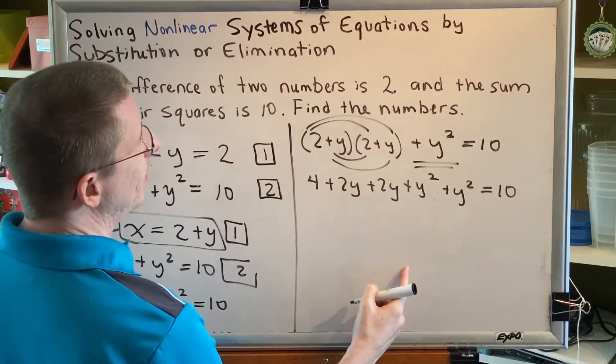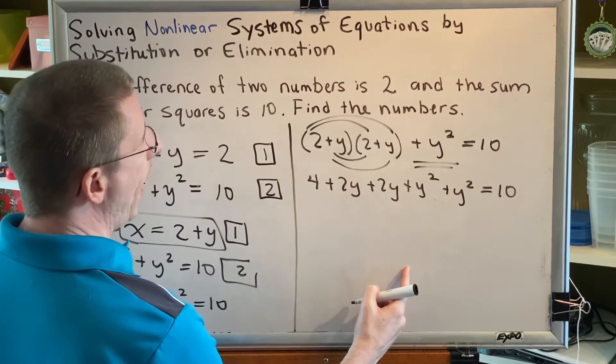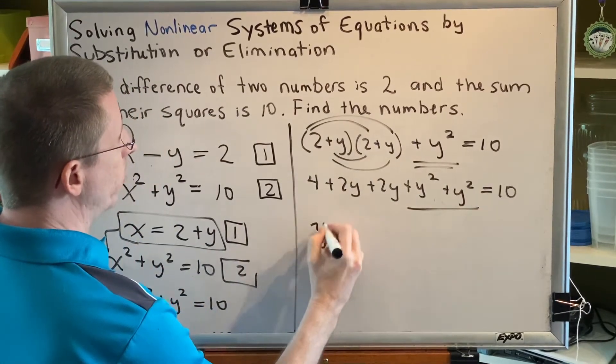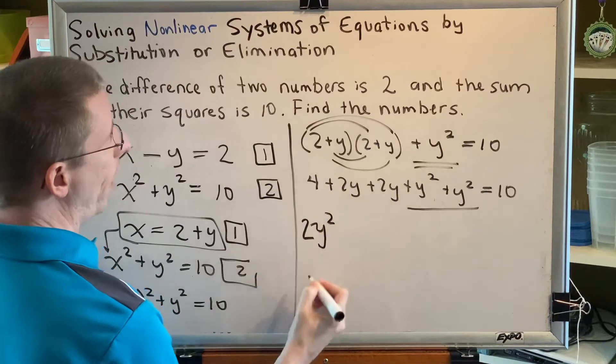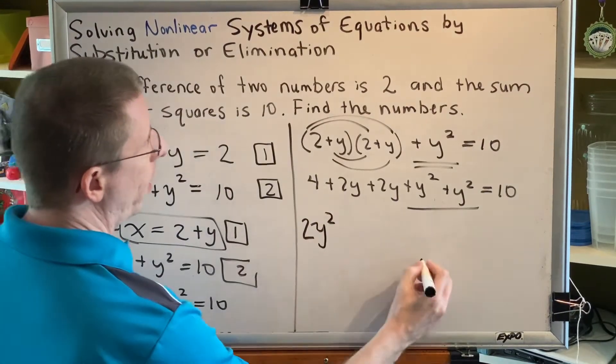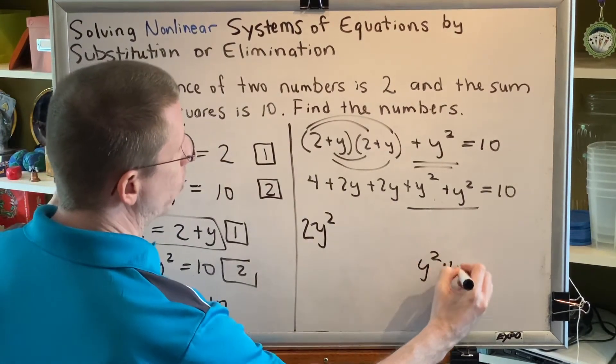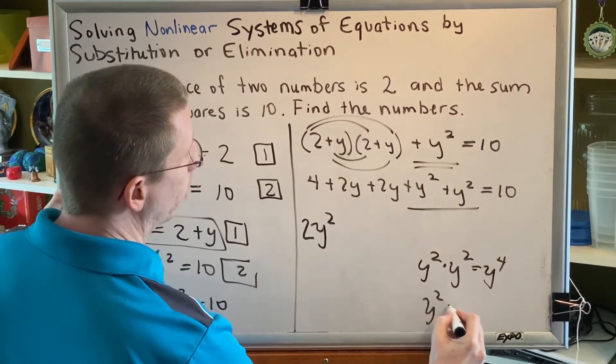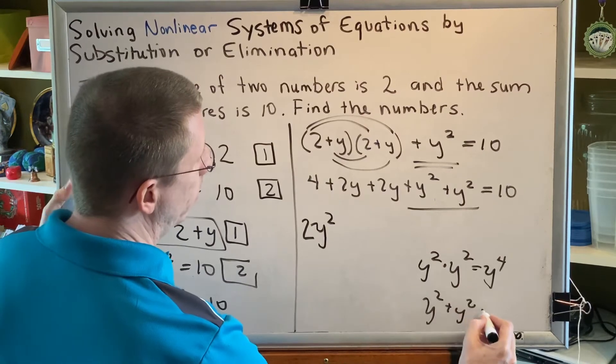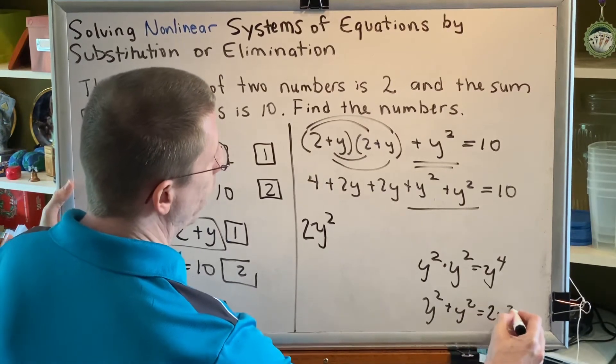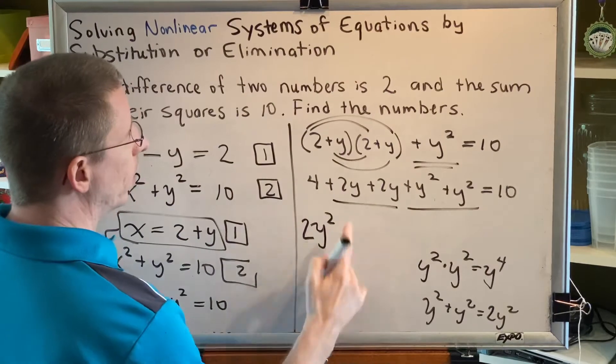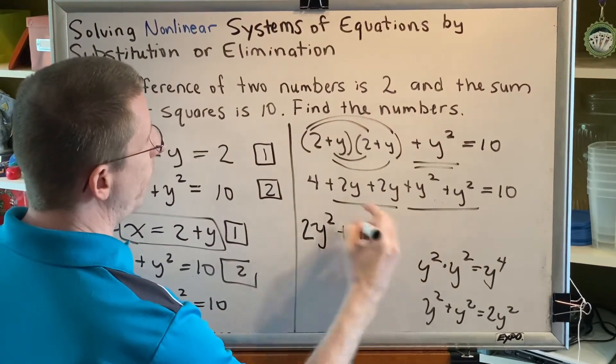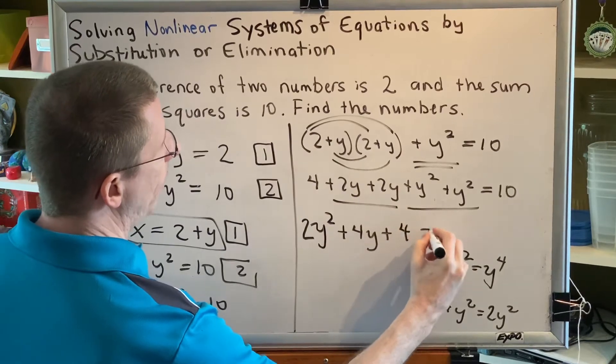Now, put your terms in descending order and combine like terms. Plus y squared plus y squared is 2y squared. It is not y to the fourth. y squared times y squared is y to the fourth. y squared plus y squared is equal to 2y squared. So be very careful. Similarly, 2y plus 2y makes plus 4y. And then we have plus 4 and equals 10.